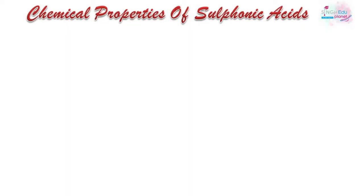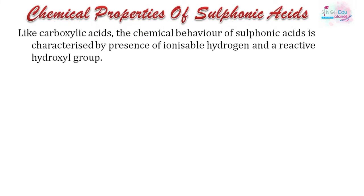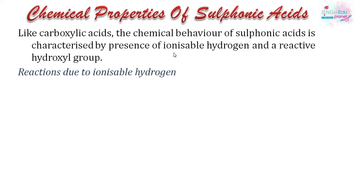Now let's look at the chemical properties. In sulfonic acid, the chemical behavior is characterized by the presence of an ionizable hydrogen and a reactive hydroxyl group, similar to carboxylic acid. We will now start the reactions, beginning with ionizable hydrogen.